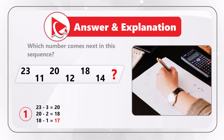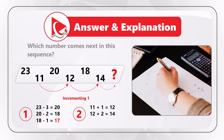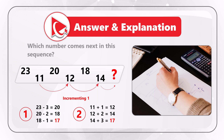The even-positioned numbers — 11, 12, 14, and the missing number — are calculated using a different pattern: the opposite, where instead of decrement we use increment. For example: 11 plus 1 equals 12. Then we increase the increment: 12 plus 2 equals 14. The missing number is therefore 14 plus 3, which equals 17.